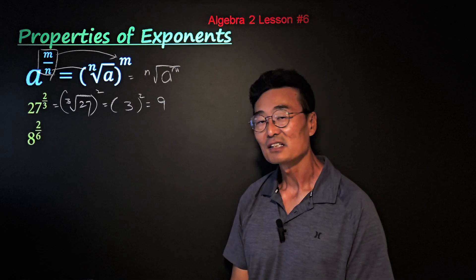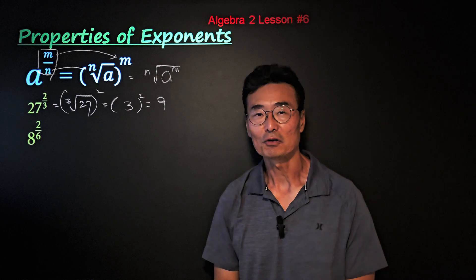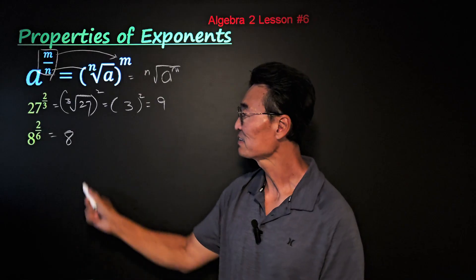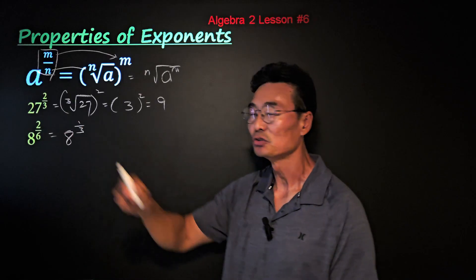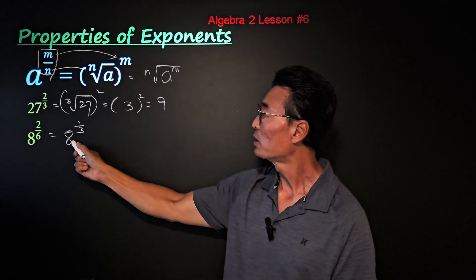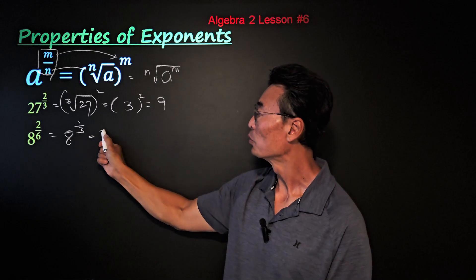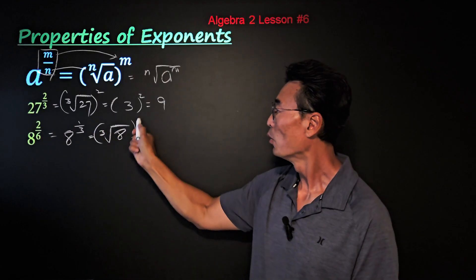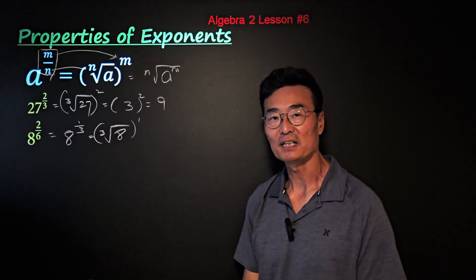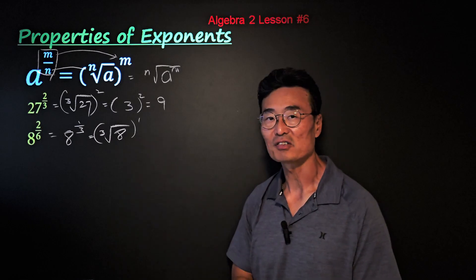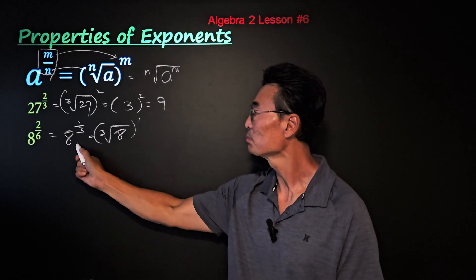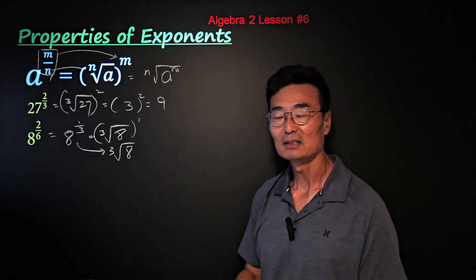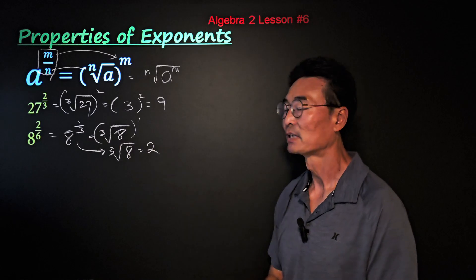Here's a second example: 8 to the 2 over 6 power. First, reduce 2 over 6 to 1 over 3. So 8 to the 1 third power becomes the cube root of 8, all to the 1 power. Since anything to the 1 power is itself, we simply rewrite this as the cube root of 8, which equals 2.